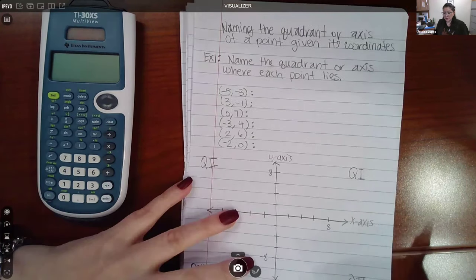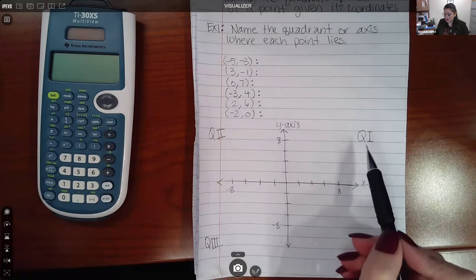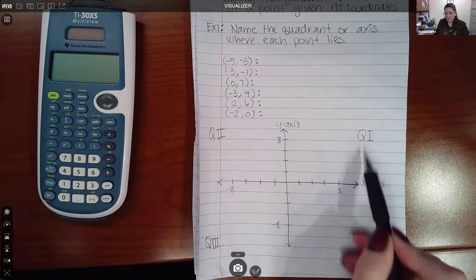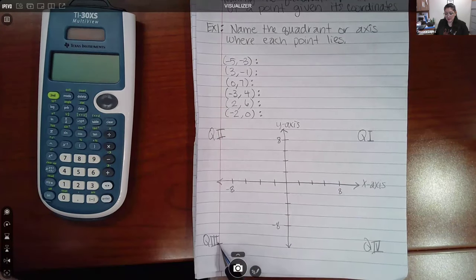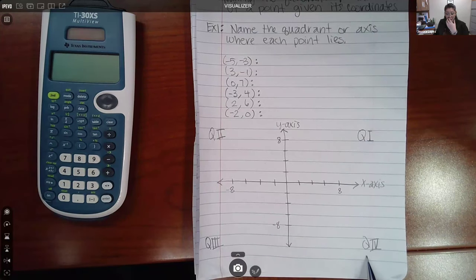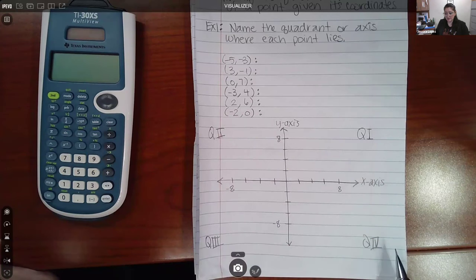So I do want to point out that you do need to label everything first before you begin. So quadrant one is always in the top right corner, then quadrant two is top left, and then quadrant three is bottom left, quadrant four is bottom right. So it does start in the top right and it goes counterclockwise.